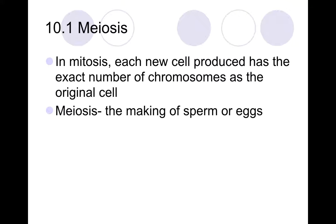Remember in mitosis, at the end of mitosis, each cell produced has the exact same number of chromosomes as the parent cell. So at the end of mitosis you end up with two daughter cells that are exactly like the parent cell you started with. Unlike in meiosis, where we are making the sperm and eggs — the sex cells — in which we get four daughter cells with half the number of chromosomes, and they're genetically different than the parent cell.